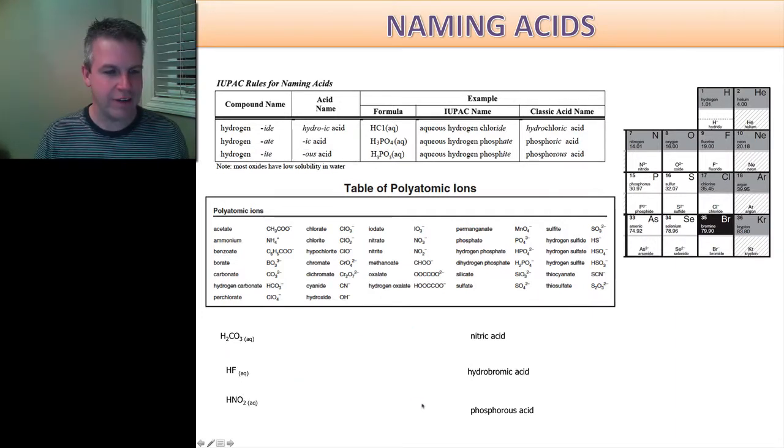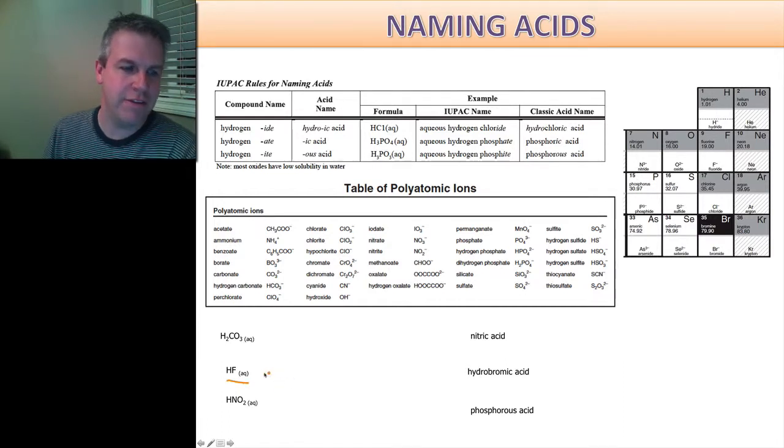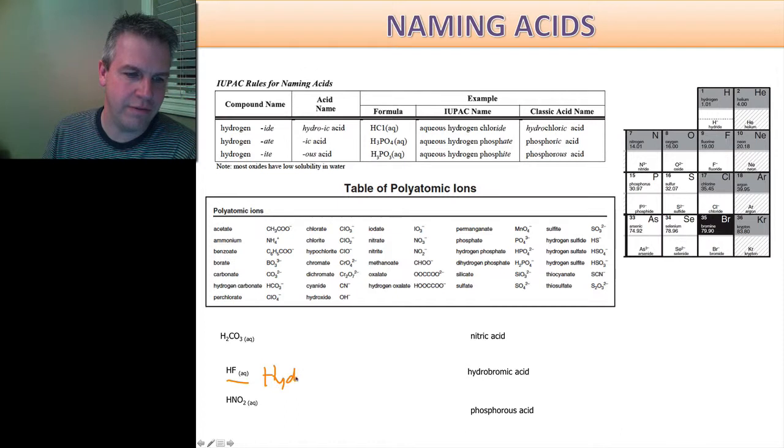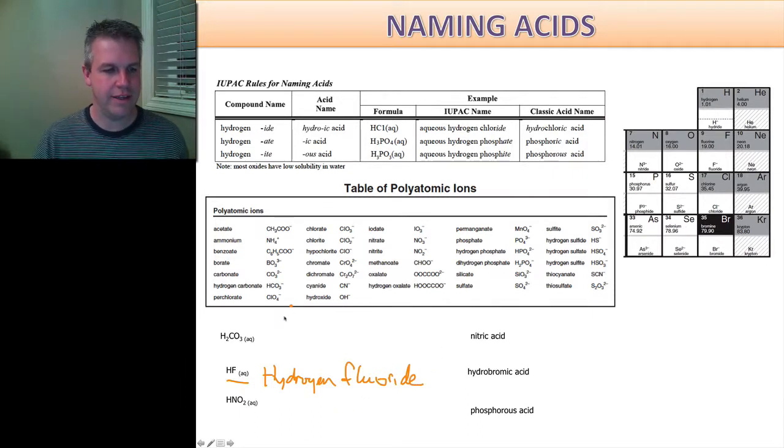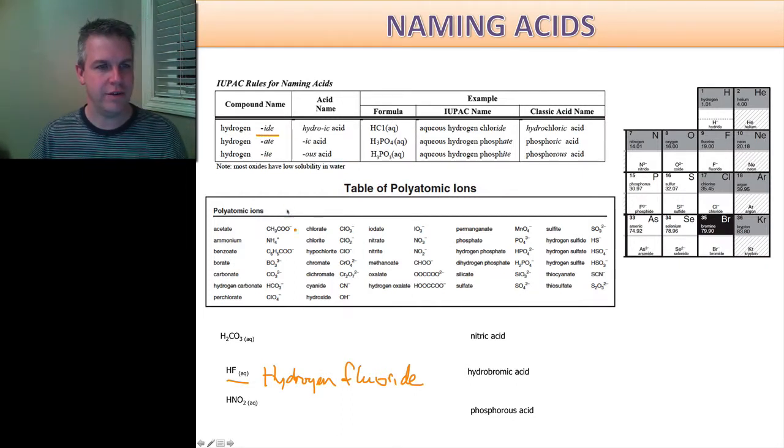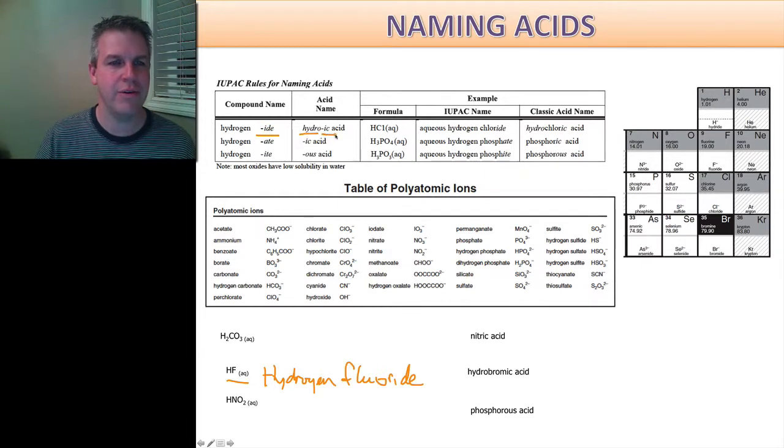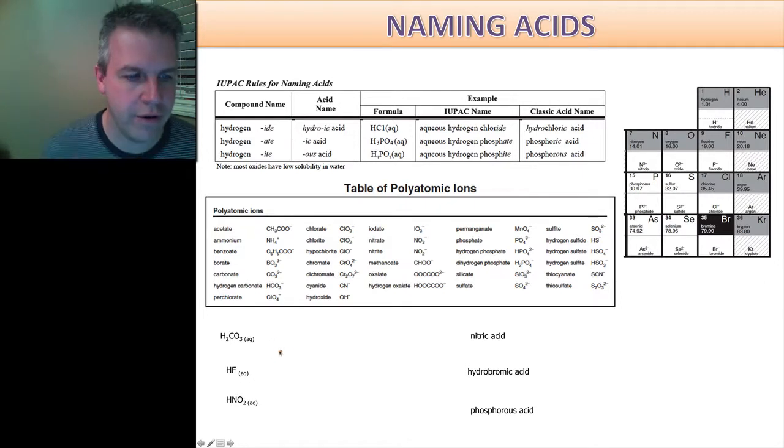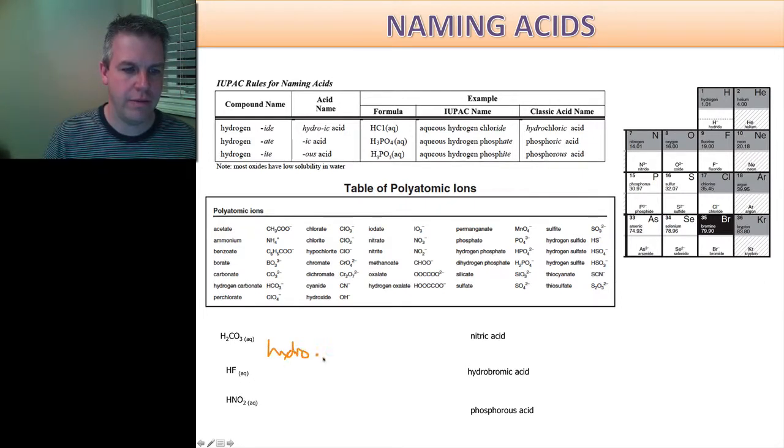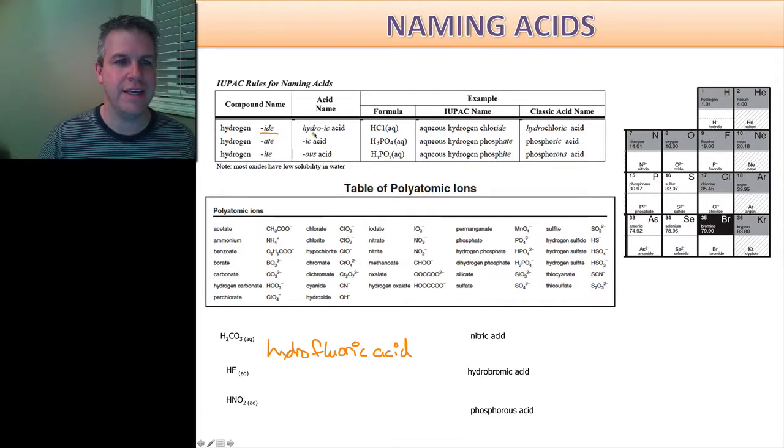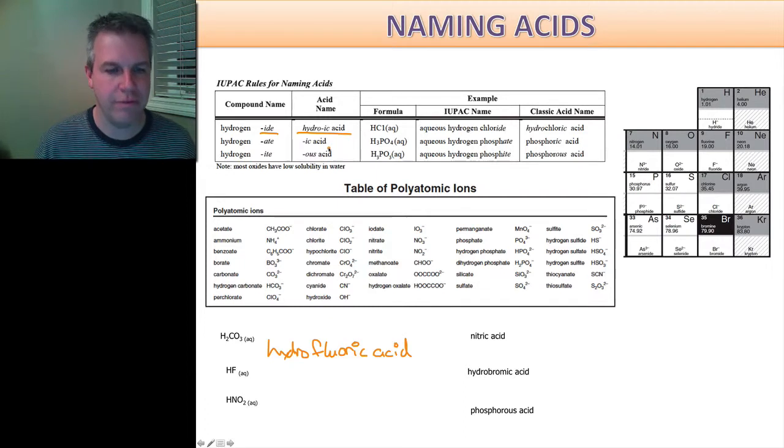Moving on to our next example. HF. This is hydrogen fluoride. And when I name that, I'm going to look again at my list up here. It's hydrogen. And so ide tells me that I have to call it a hydro, and then it will have an ic acid. So now I'm going to call that hydrofluoric acid. So again, we just follow the rules because fluoride ended in ide. I have to name it as hydro and then fluoric acid.